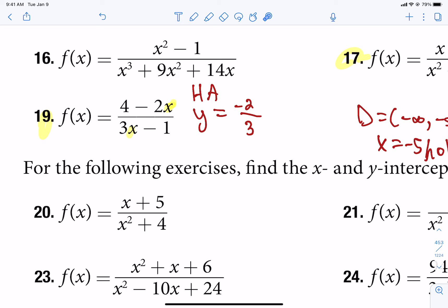So on the ends, this particular graph for 19 heads to a height, instead of 0 like most of them do, it heads to a height of negative 2 thirds. So kind of interesting when it does that.